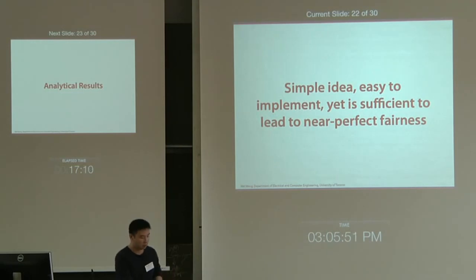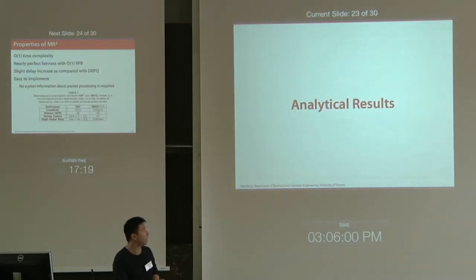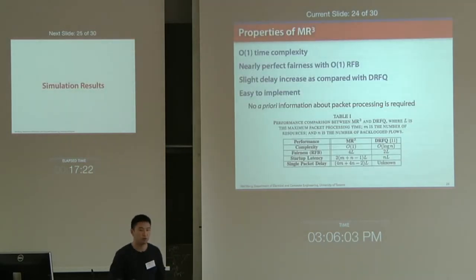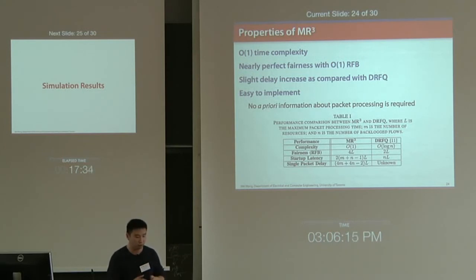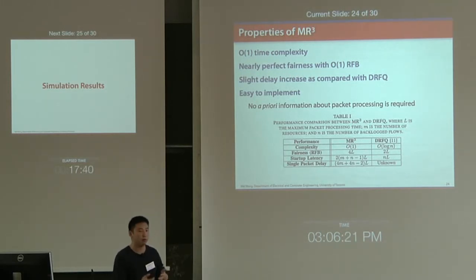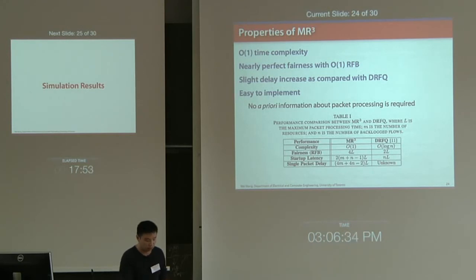This turns out to be a simple idea that is very easy to implement. For detailed implementation, please refer to the technical paper. Analyzing its properties: first, it takes O(1) time complexity to schedule every packet. It achieves near-perfect fairness, with RFB bounded by only a few packet processing times. The price we pay is a slightly increased delay compared with the existing DIFQ design. It also requires no prior knowledge about packet processing times.